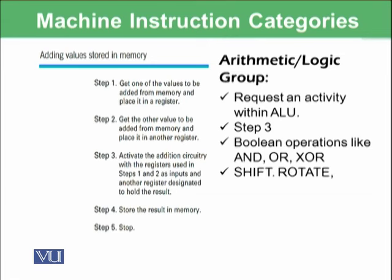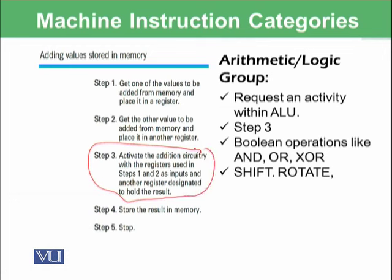The second group is the arithmetic logic group, which represents activity within the arithmetic logic unit (ALU). In our previous algorithm, step three is an arithmetic logic group instruction: it activates the addition circuitry using the registers from steps one and two as inputs and another register to hold the result. The ALU also performs AND, OR, and exclusive OR (boolean operations), as well as shift and rotate operations, which we will learn about in the next modules.